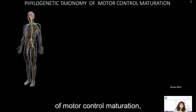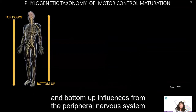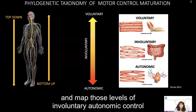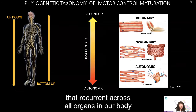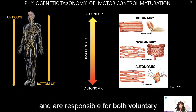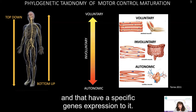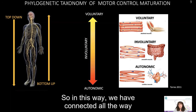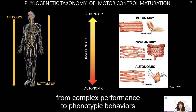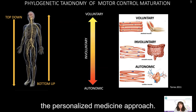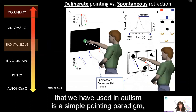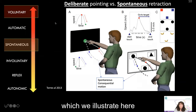We pair this paradigm with a phylogenetic taxonomy of motor control maturation, studying both top-down and bottom-up influences from the peripheral nervous system to the central nervous system, and map those levels of both involuntary and autonomic control to three fundamental types of muscle tissues that occur across all organs in our body and are responsible for voluntary, involuntary, and autonomic control. In this way, we have connected complex performance to phenotypic behaviors to tissues that have genomic and proteomic expression that we can quantify — all within a personalized medicine approach.